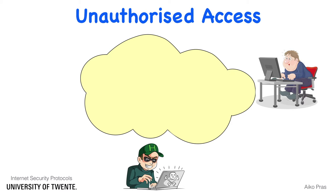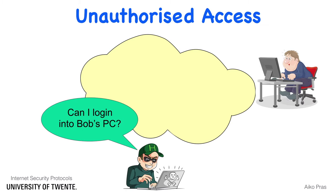Unauthorized access is an attack in which an attacker tries to break into another system. For example, assume that the attacker wants to break into Bob's system using SSH.